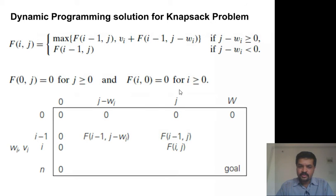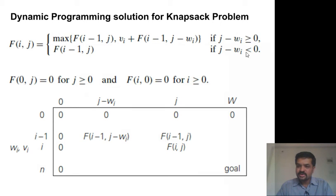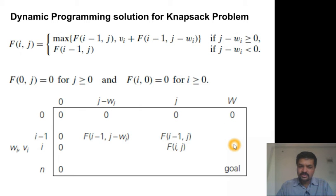There is a special case: when the weight of the i-th object is more than j — that is, when j − w_i is less than 0 — we cannot choose the i-th item at all. So we go with f(i−1, j). The base cases are: f(0, j) = 0 for all j (when no items are allowed to choose) and f(i, 0) = 0 for all i (when knapsack capacity is 0). Let's see with an example why these zeros are there and then fill the table.